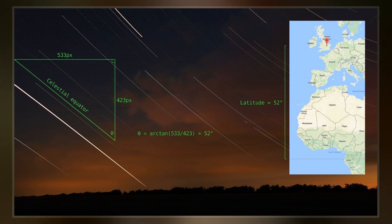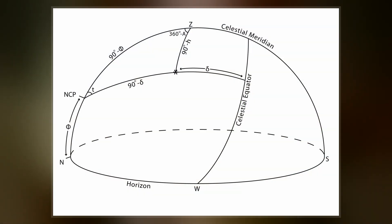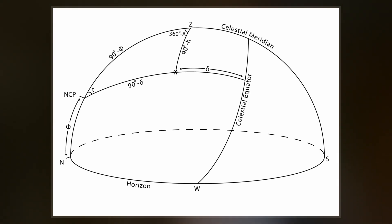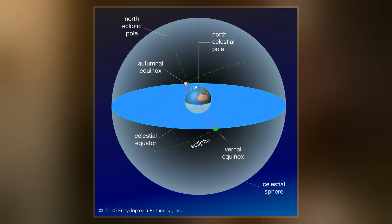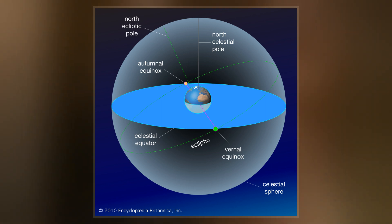An observer standing on Earth's equator visualizes the celestial equator as a semicircle passing through the zenith, the point directly overhead. As the observer moves north, the celestial equator tilts towards the opposite horizon.